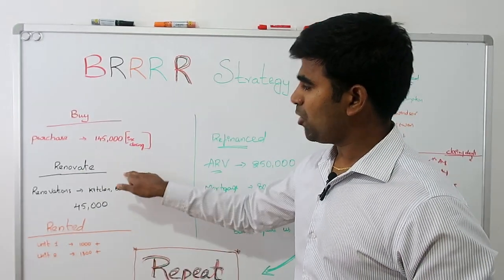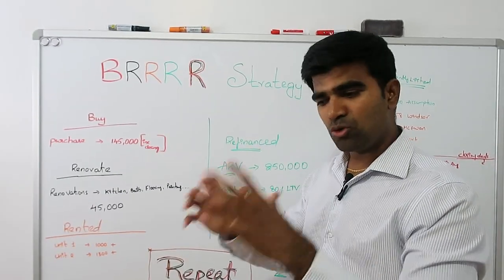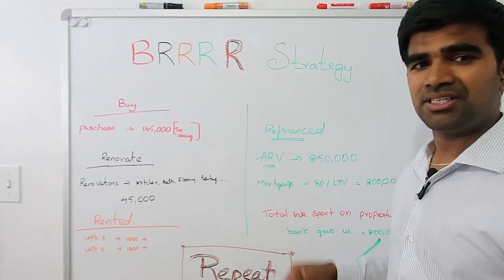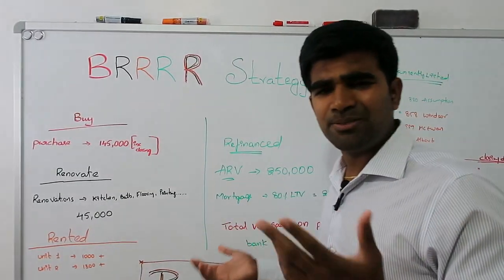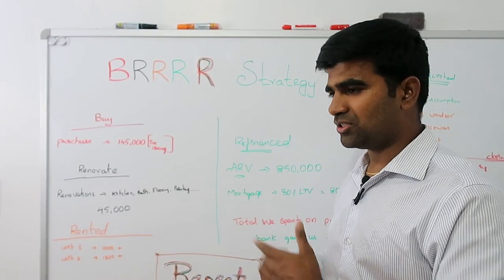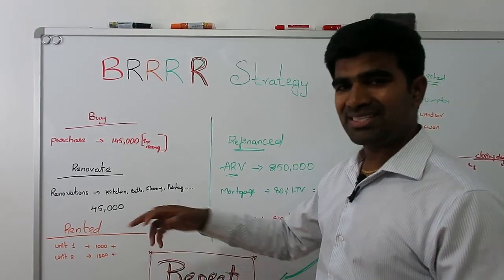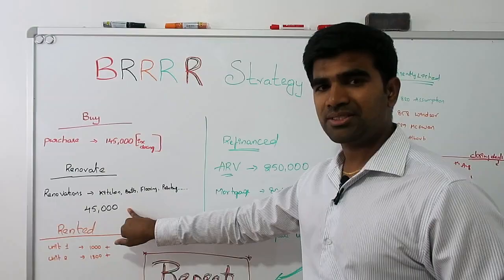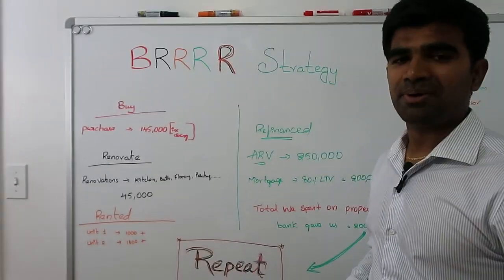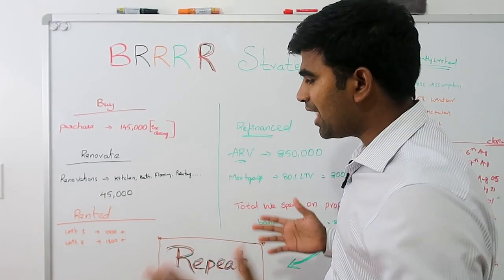Point two: now I have to fix the property because it needed some love. I got my contractors in and we started work. We estimated thirty to forty thousand, but we went over budget because of finding some other things in the property. You can check in my video - you will see what I have done - but I invested $45,000 in renovations. That's the second point: renovated the property.